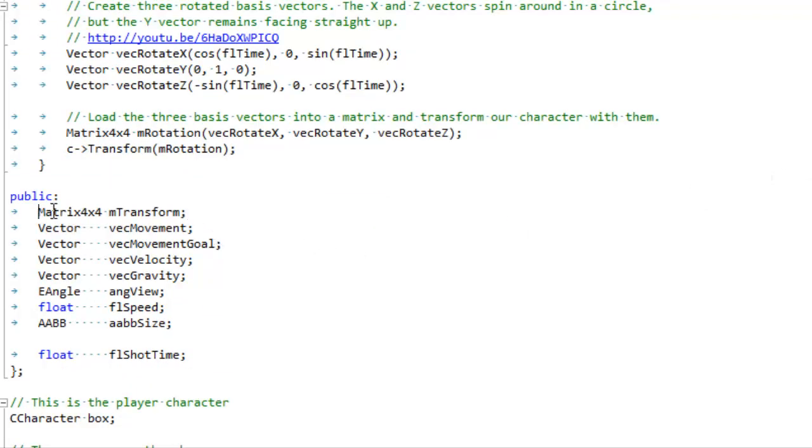And previously it had a point right here, and we would use that point to define where our character was in the world. But now you see we're doing it with a matrix. And the observant of you will notice that this is a 4x4 matrix, which is actually what we've been using all along. And so now we have the correct matrix. We're using all of the matrix's power.